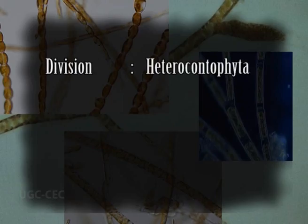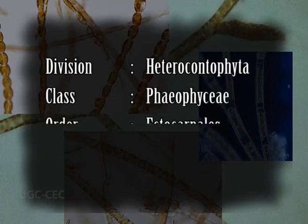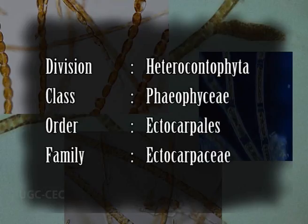About 16 species of this genus have been reported from India. The genus Ectocarpus belongs to division Heterokontophyta, class Phaeophyceae, order Ectocarpales, and family Ectocarpaceae.